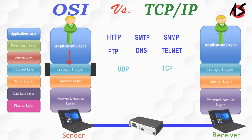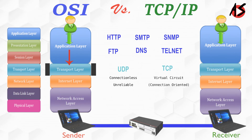UDP provides connection-less services and end-to-end delivery of transmission. It is an unreliable protocol and does not report lost packets. On the other hand, TCP establishes a virtual circuit between the sender and receiver, which is active for the duration of transmission. TCP is a reliable protocol, ensuring all segments must be received and acknowledged.